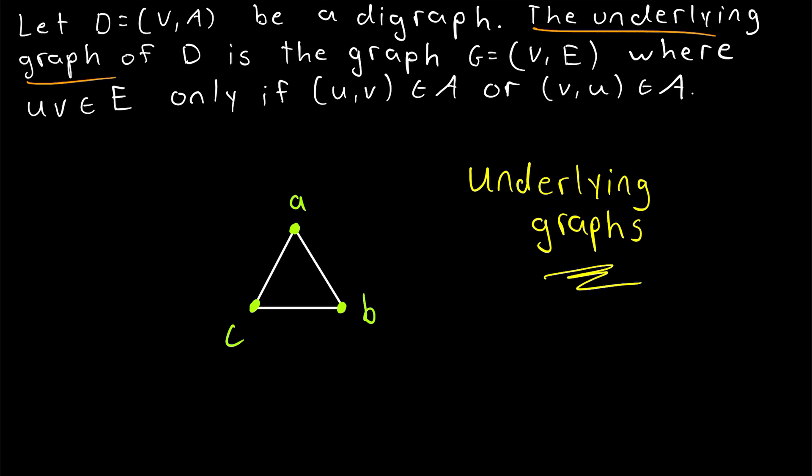This definition of underlying graph just says to get the underlying graph of a directed graph, just take the same vertex set, and then for the edges, any two vertices that were joined by one or two arcs in the directed graph, join them by a single edge in the underlying graph. Again, this definition of underlying graph does not allow the underlying graph to have multiple edges joining the same pair of vertices.